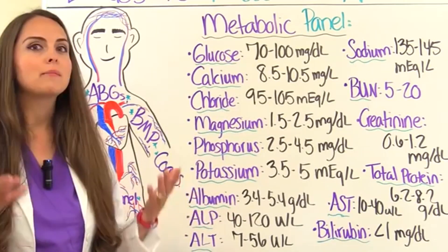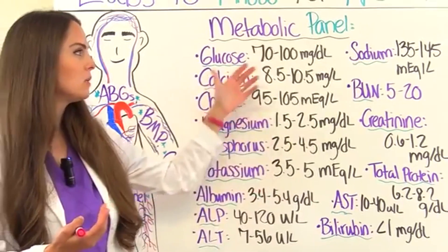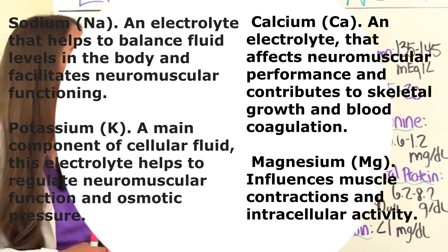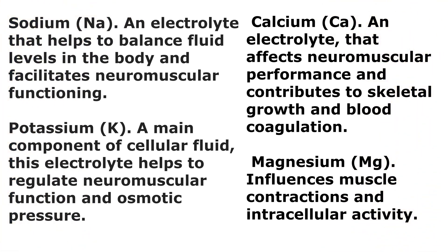A memory trick: these values are all represented with multiples of five, which can help keep them straight. It's also important to know what the different electrolytes are for, in case the NCLEX asks you questions. For example, if the NCLEX talks about muscle cramping, the electrolyte with the likely imbalance would be magnesium. Let's look at the whiteboard and talk about the electrolytes that are important for the NCLEX.